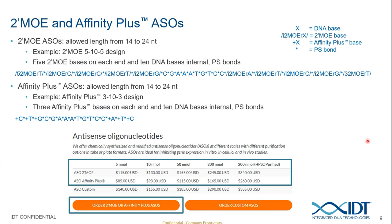IDT recently launched a new ASO product line allowing for improved yield deliverables and pricing. For standard ASO products, the allowed length is 14 to 24 nucleotides, but the preferred standardized antisense oligos are a 5-10-5 2'-MOE gapmer, with five 2'-MOE bases on each flanking end surrounding a 10-DNA-base core. They can be ordered as standard desalts for all provided scales, or at the 200 nanomole scale, as HPLC purified.